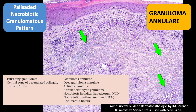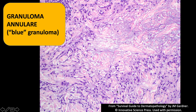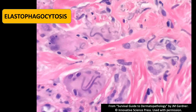There's a list of things that can have that palisaded necrobiotic pattern. Here's a closer look. These are classically blue from the mucin or myxoid material, so they're sometimes called blue granuloma. This is an example of elastic fibers getting eaten by giant cells — elastophagocytosis — which you sometimes see in granuloma annulare that occurs in sun-damaged skin.